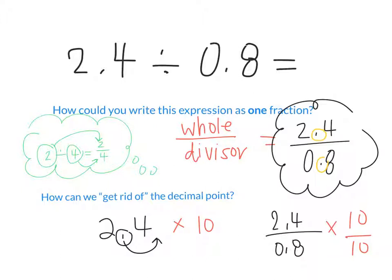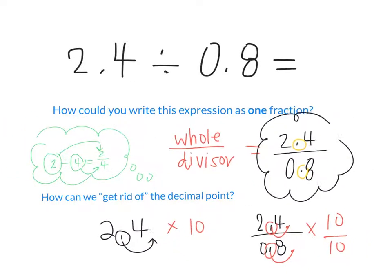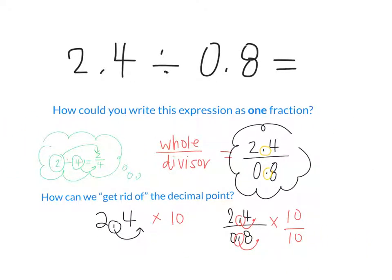So if I were to multiply by 10, wouldn't that shift that over there? And this one would shift over here? So what's my new expression? 24 over 8. Let me move this over a little bit so that I have enough space. So that equals 24 over 8. Can we simplify that? What is that? 3.